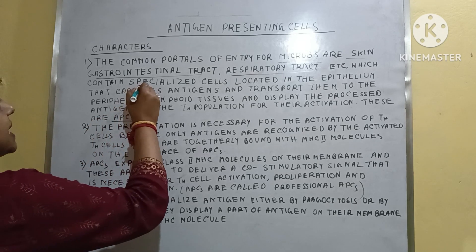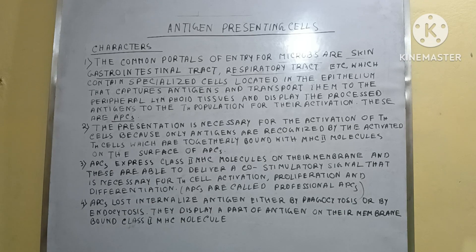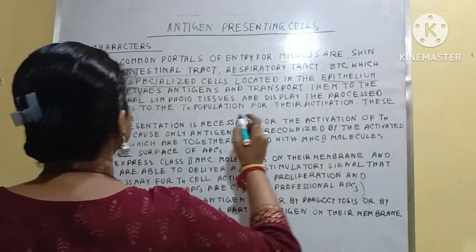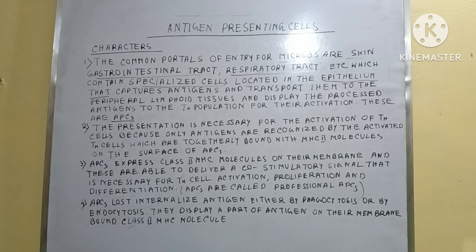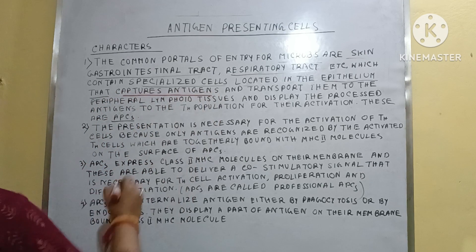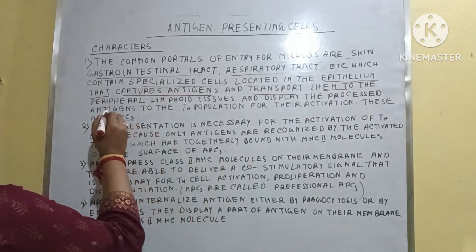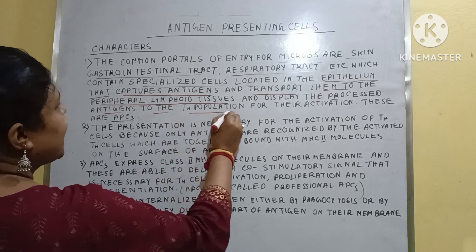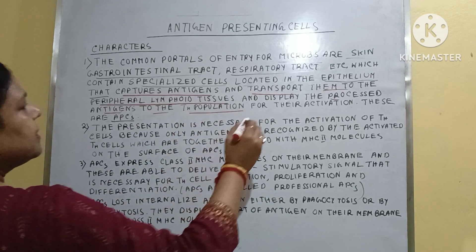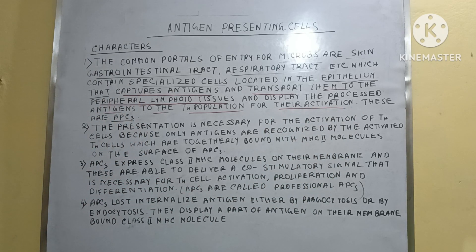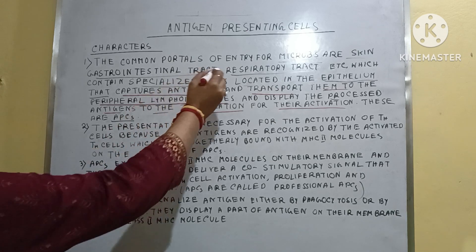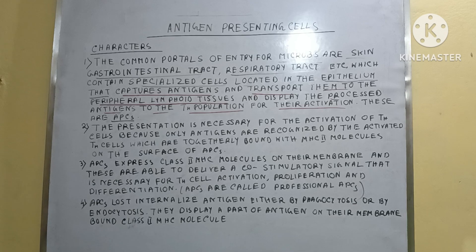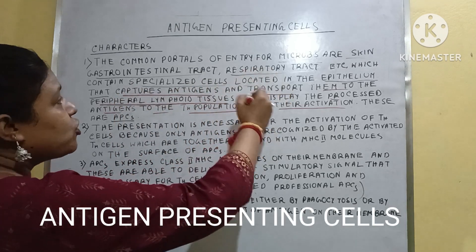There are some specialized cells located in the epithelium tissues. What is the role of these Antigen Presenting Cells? They generally capture the antigens and transport them to the peripheral lymphoid tissues. They display the processed antigens to the TH populations — the TH cells — for their activation. These antigen presenting cells remain within the inner lining of these areas, and their function is to capture the microbes or the antigens.